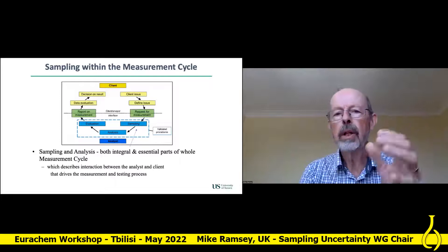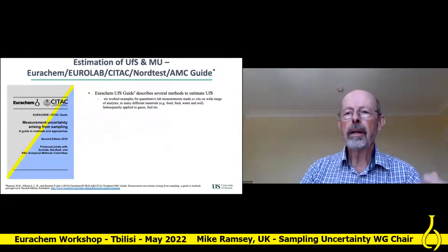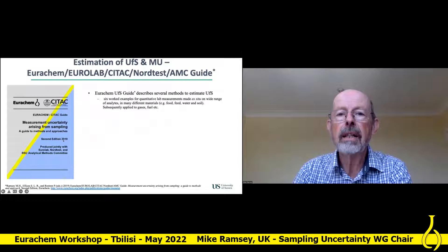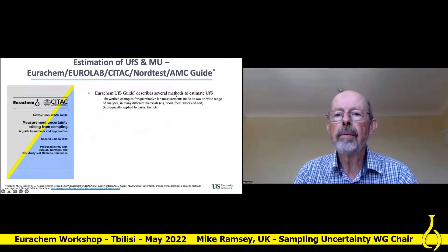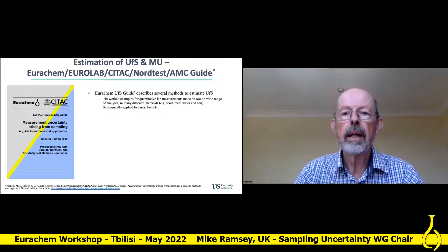Vicky explained very clearly how sampling is a key part of the measurement cycle. The material I'm going to talk about is mainly described in this Eurochem guide on uncertainty from sampling, published in 2019. It has six worked examples for food, feed, water, soil, and it's been applied widely to all sorts of different materials — fuels, gases.